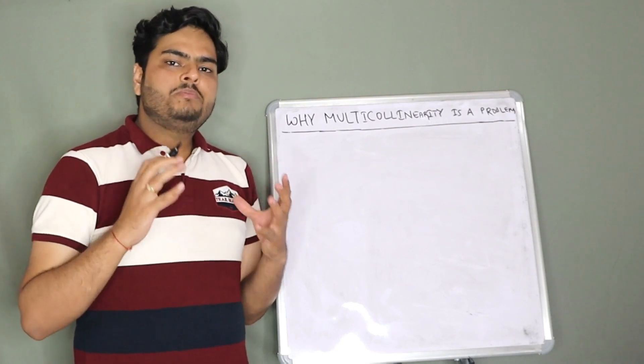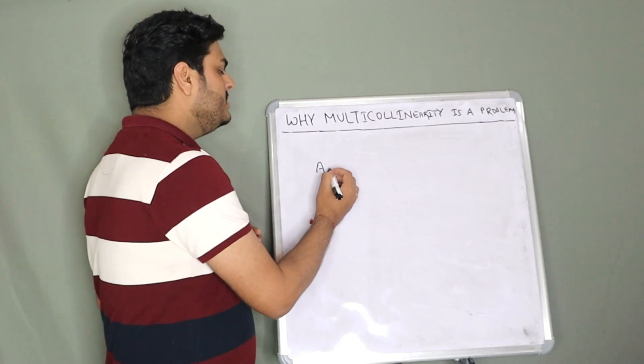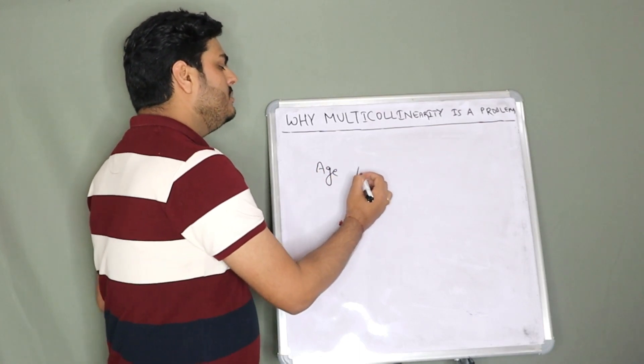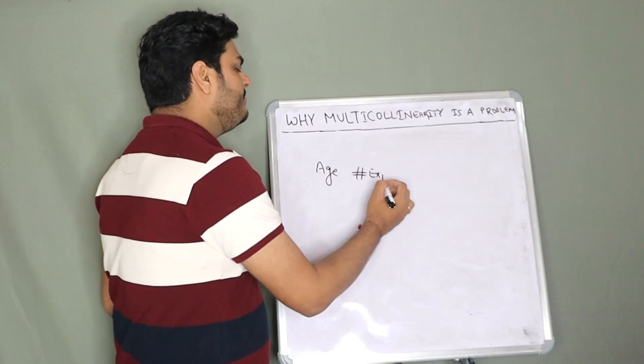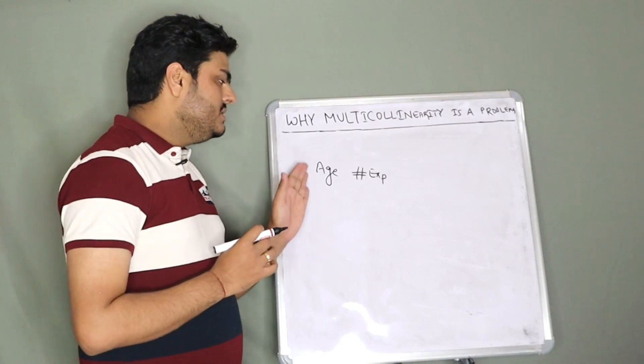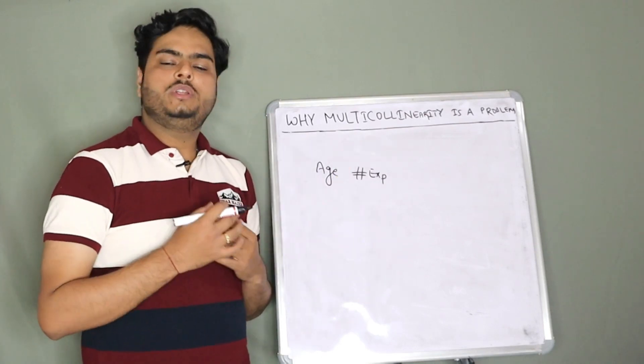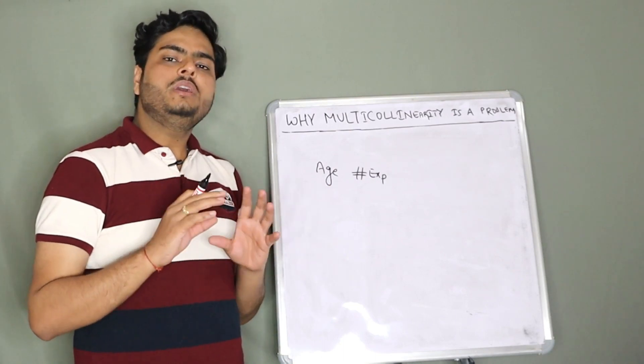An example: let's say you capture employee data of an organization. In one column you put age of the employee, in another column you put number of years of experience. It is highly possible that as age increases, number of years of experience also increases. These two variables are said to be highly positively correlated.